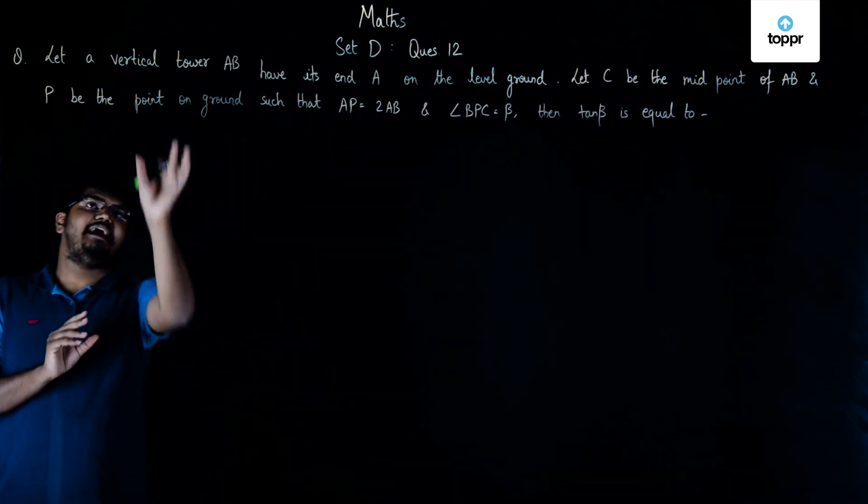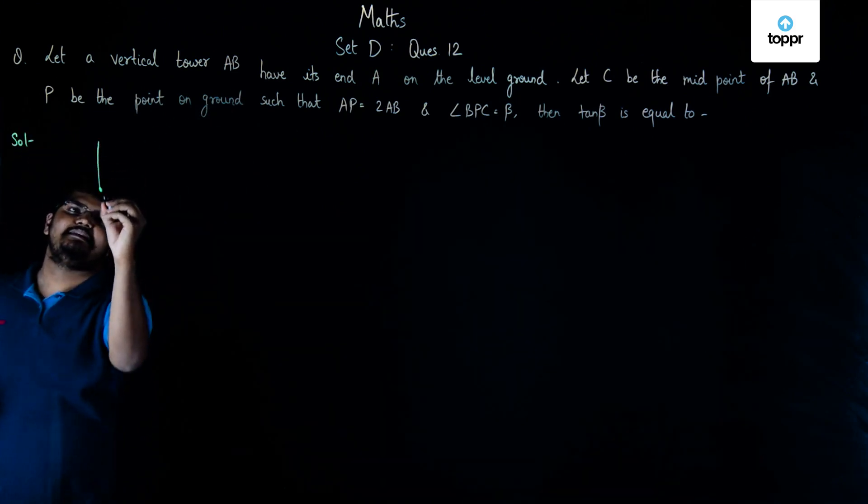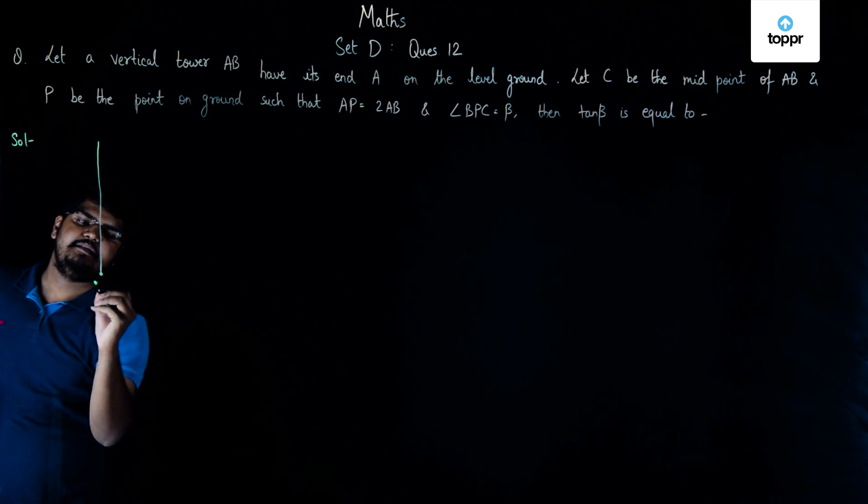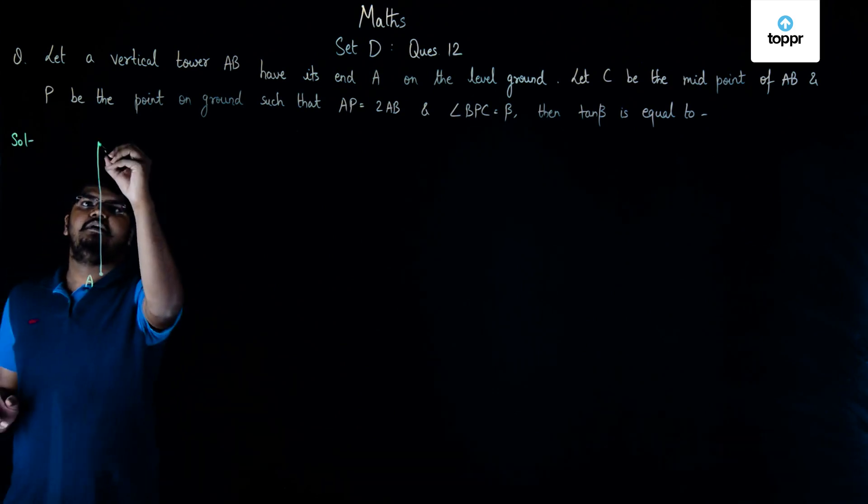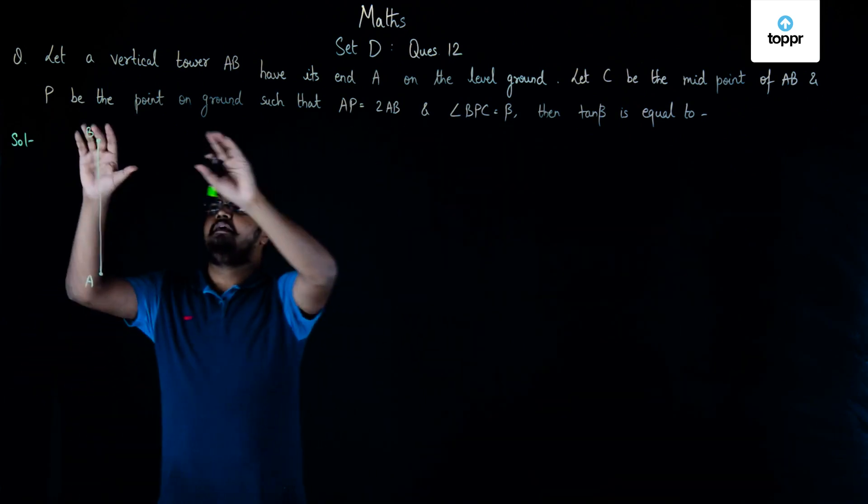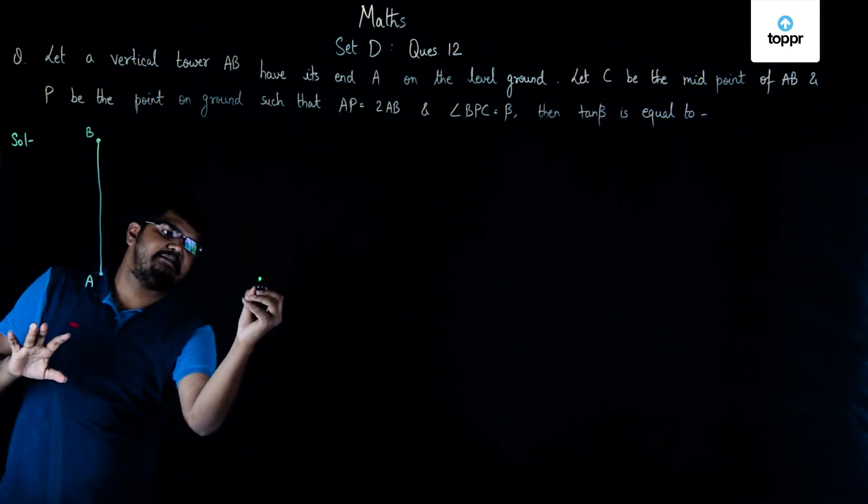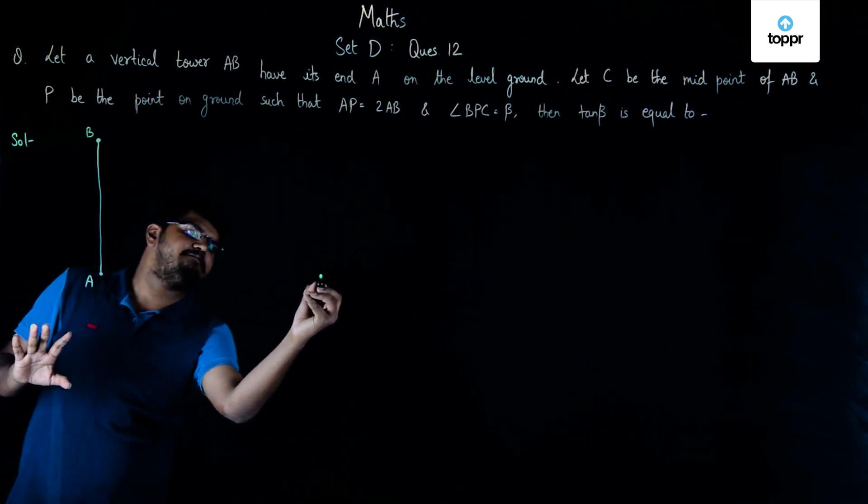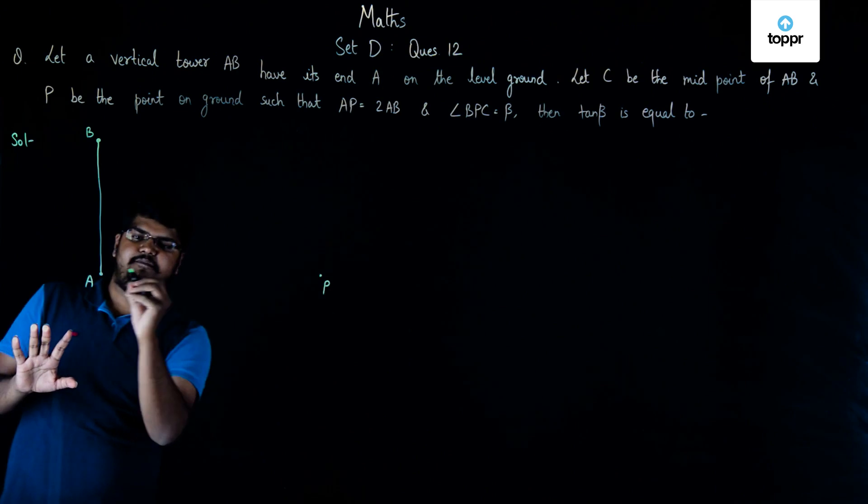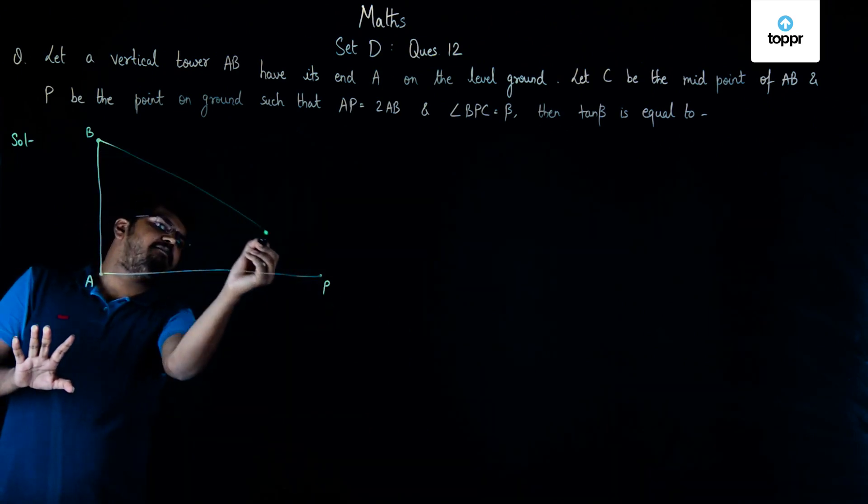According to the question, we have to consider a vertical tower AB. So, let's just say that this is the vertical tower AB, this is the level ground and this is the top of the tower and there is a point P on the ground such that AP is equal to twice AB. So, let's consider this as our point P and now I join AP and of course BP.